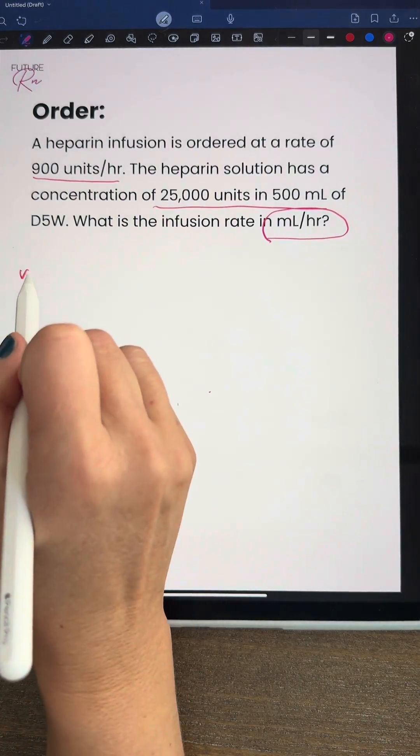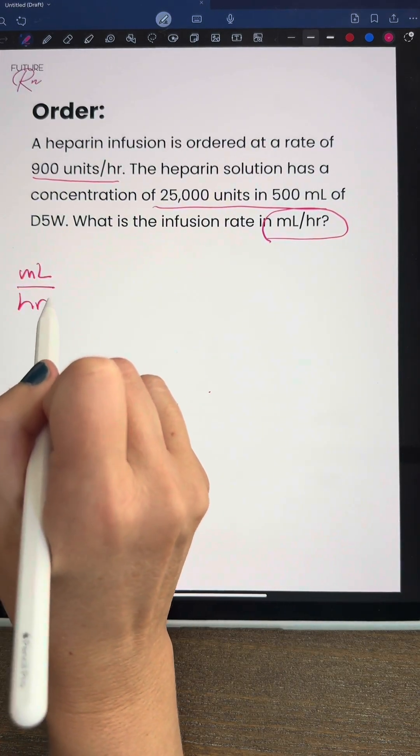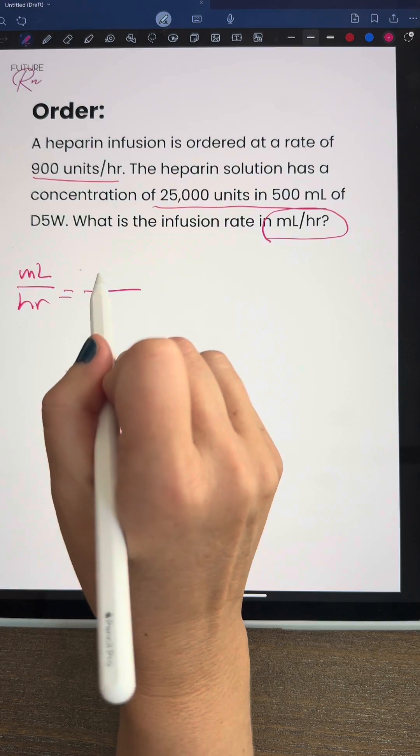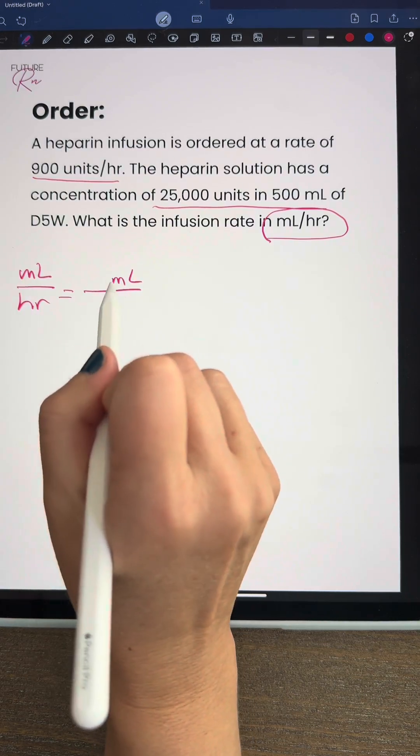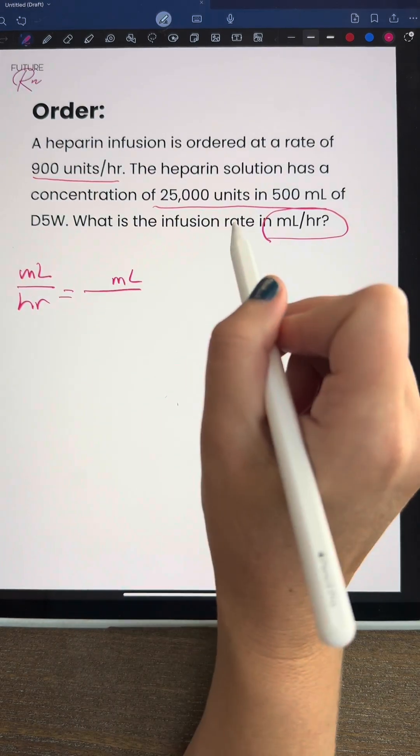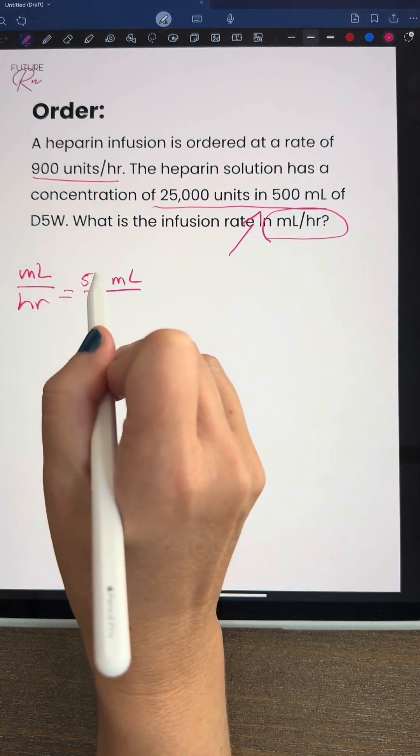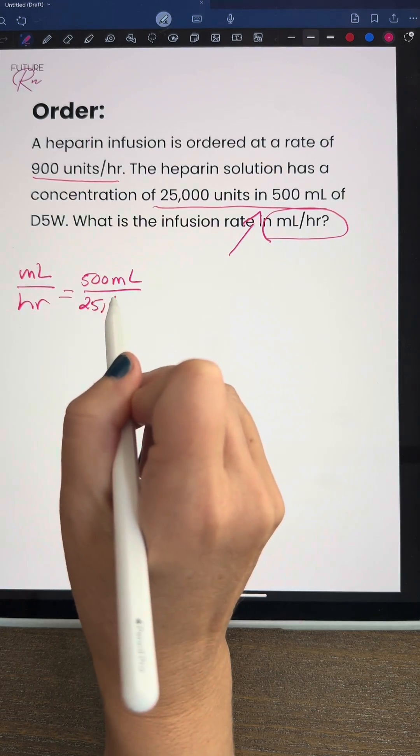We want to get to milliliters per hour, so we're going to put that to the left of our equal sign. We want our numerator to also match this unit, so we're going to have something with milliliters on top. If we go back to our problem, we'll see our concentration here is 500 milliliters and 25,000 units.